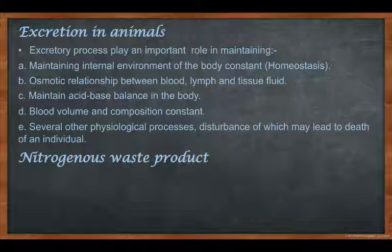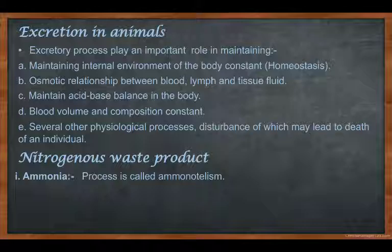Nitrogenous waste products — there are so many but basically they are in three forms. First is ammonia. Those animals which release or excrete ammonia as a waste product are called ammonotelic. This process is called ammonotelism.